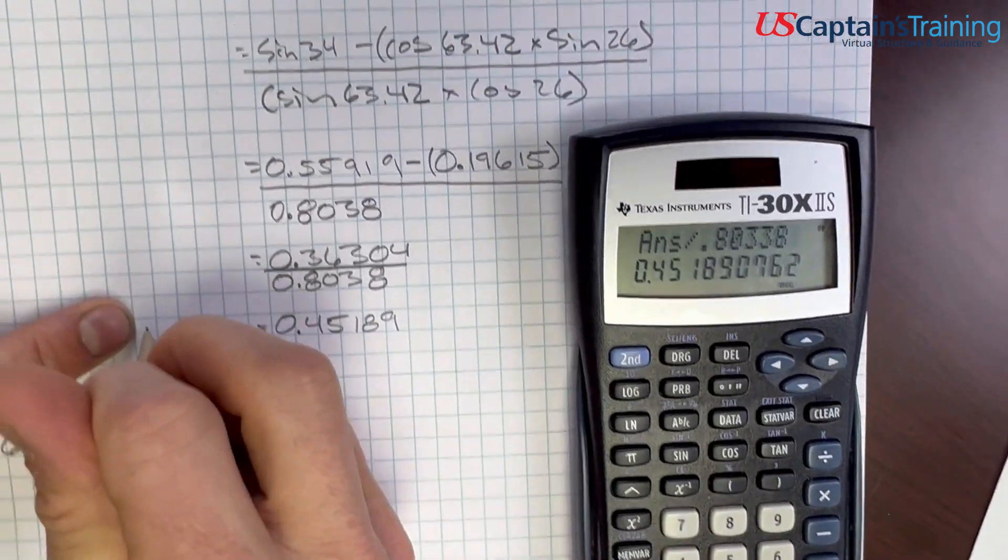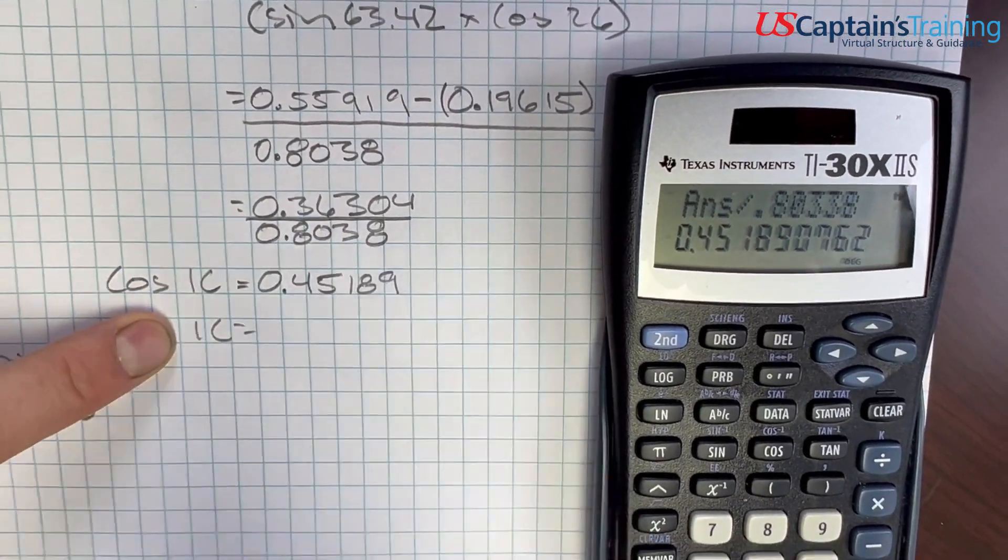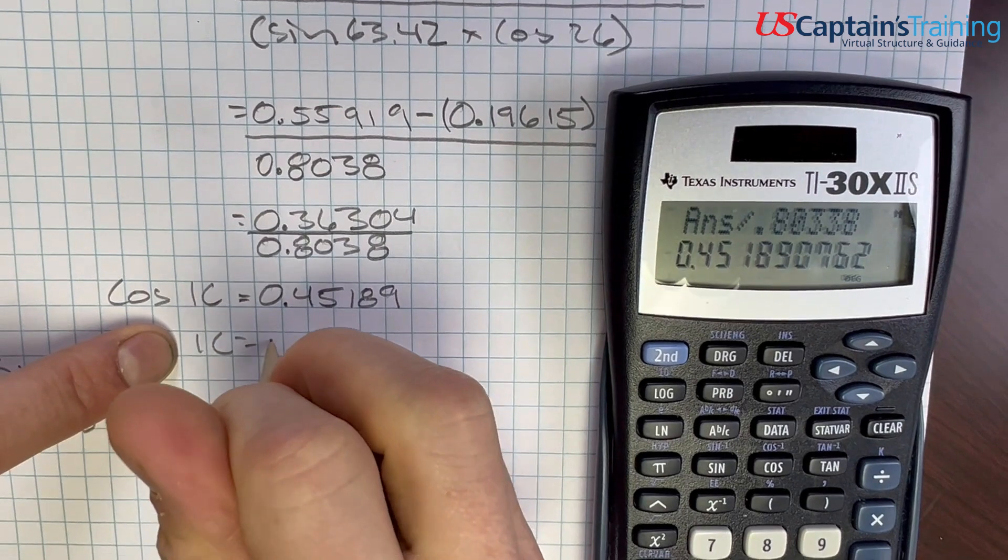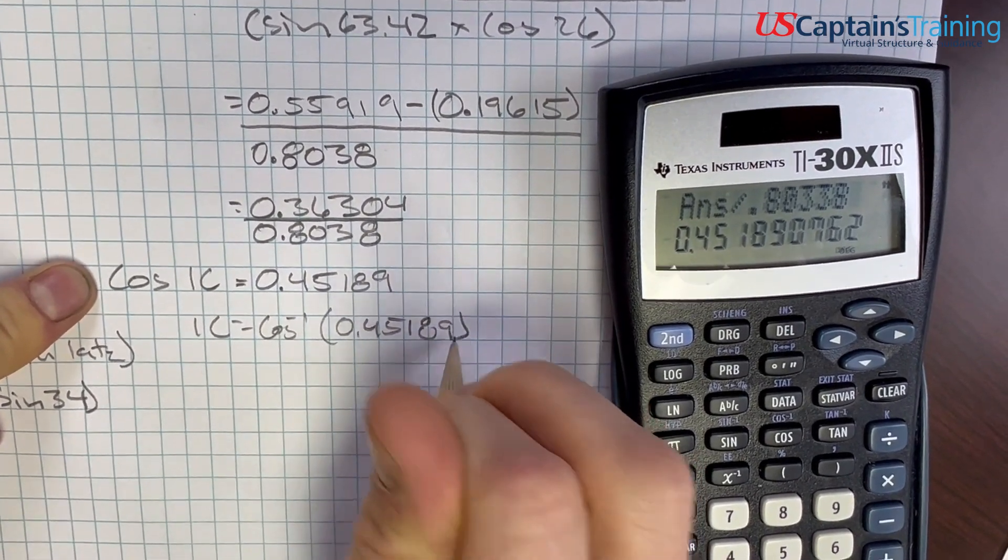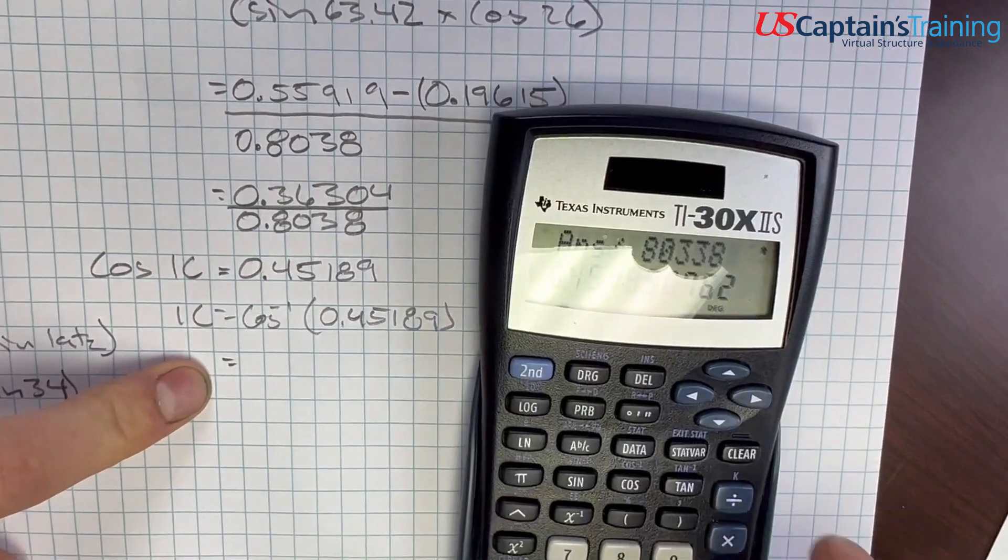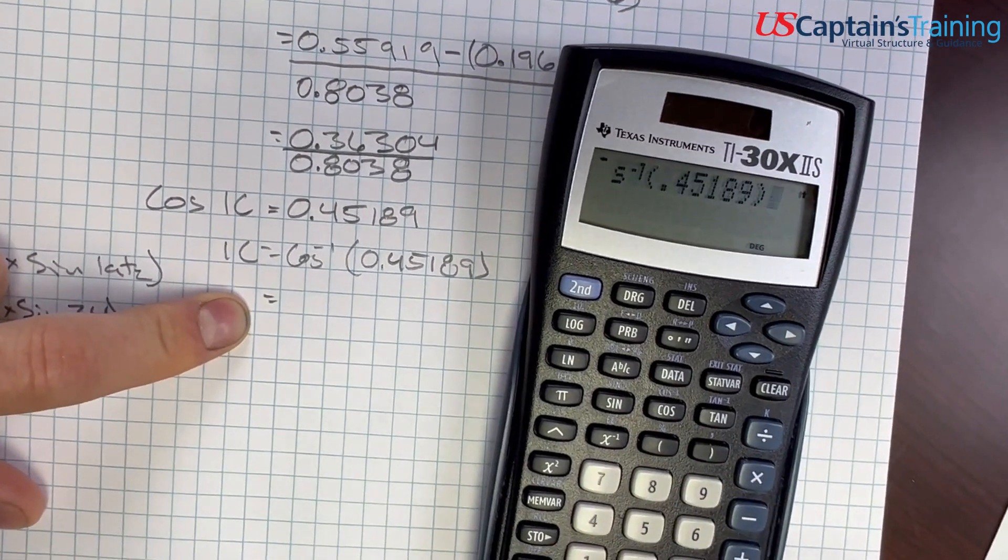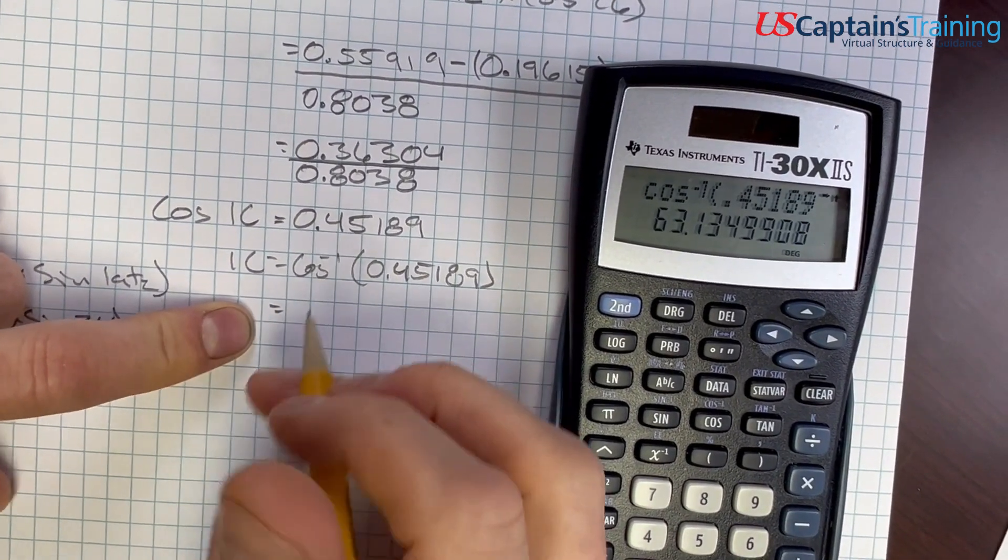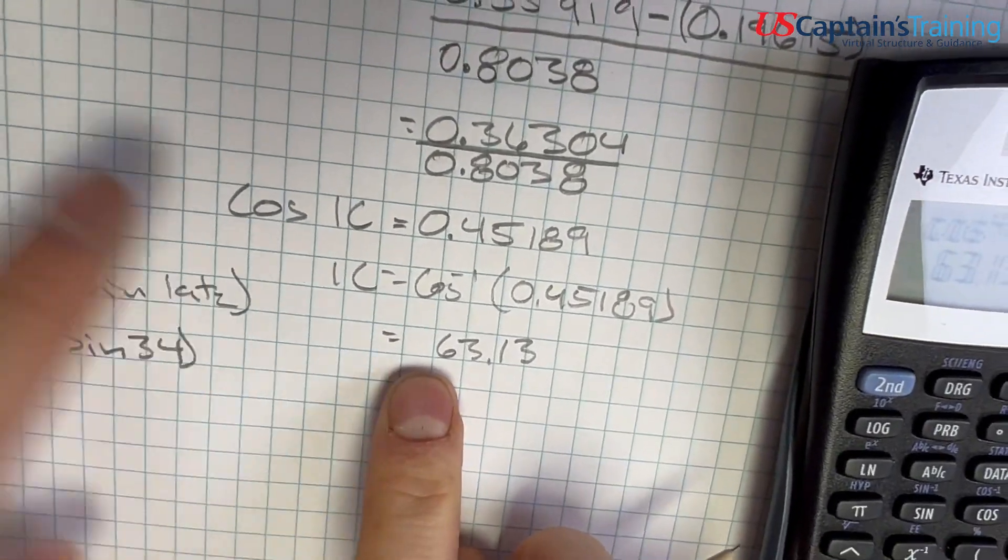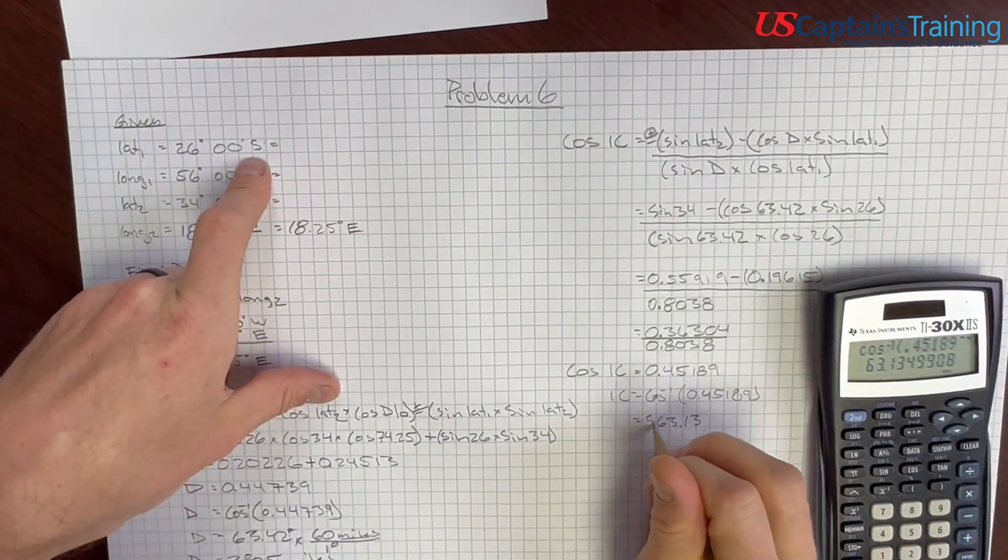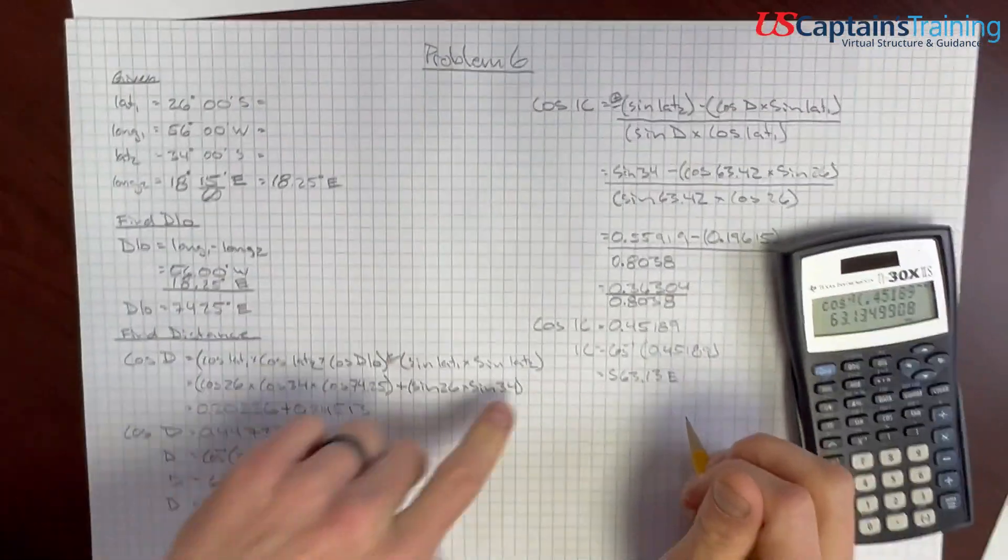And again, this is the cosine of the initial course. We just want an initial course, so we're going to take the inverse cosine. Second, inverse cosine 0.45189, enter: 63.13. And this is in quadrantal notation. We name it north-south based on lat 1, which is south, and we name it east-west based on D low, which is east. So we're south 63.13 degrees east.